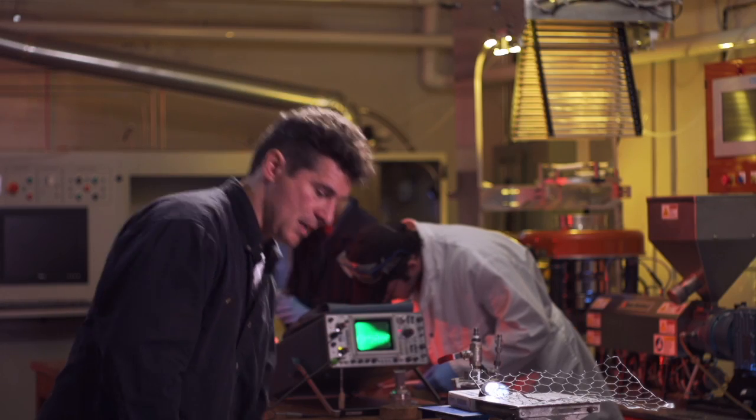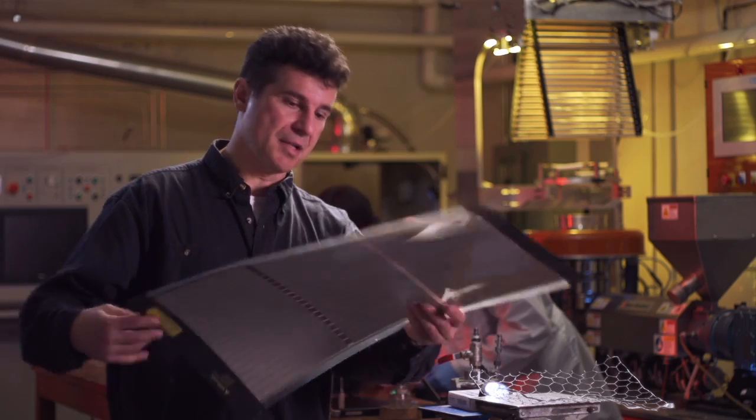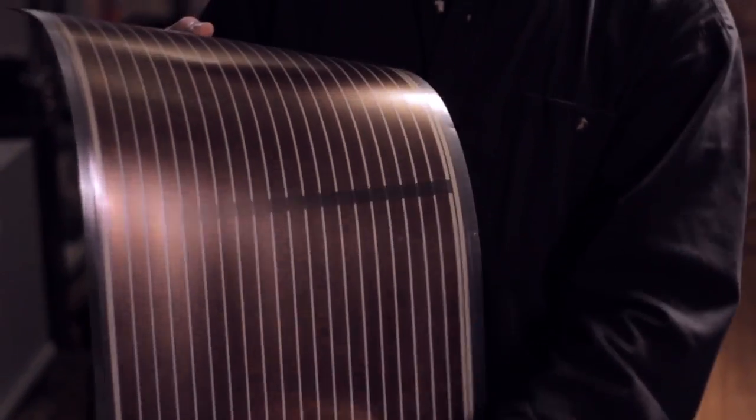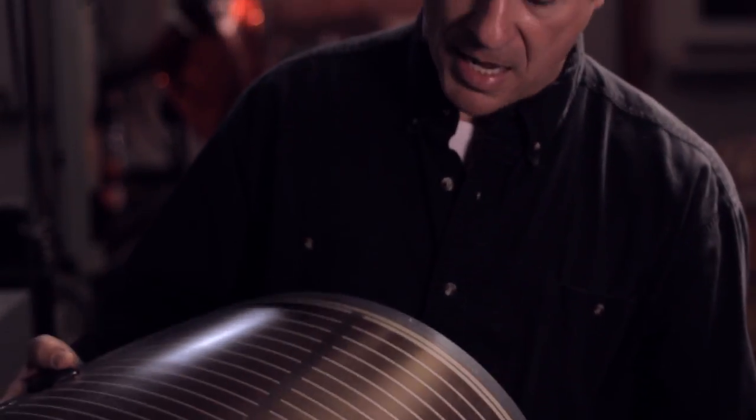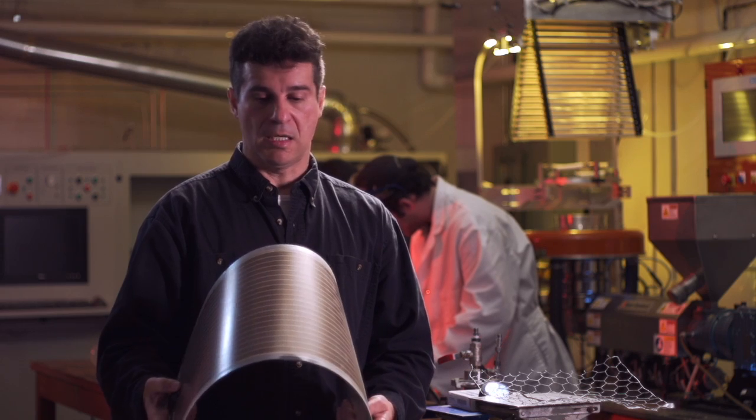For example, here's a next generation device. This is a solar cell. And this actually has fullerenes all through these dark layers. And as you can see, it's very flexible. This is not silicon.